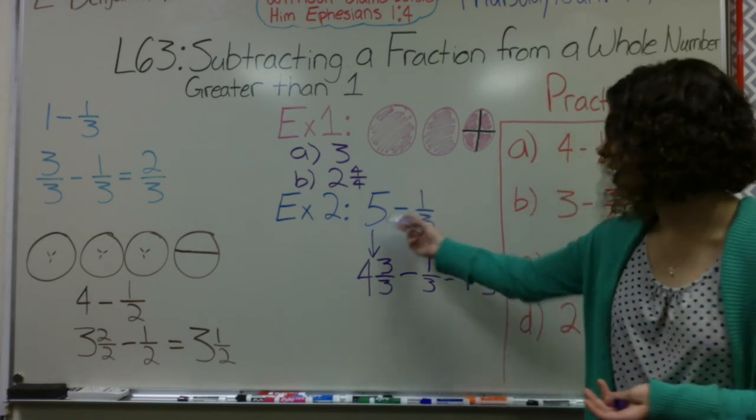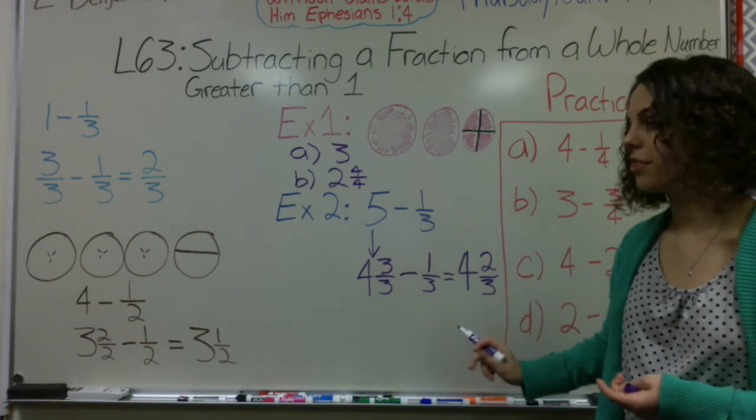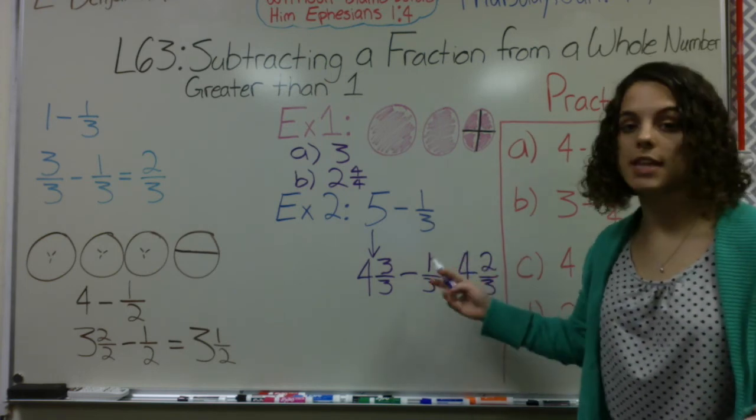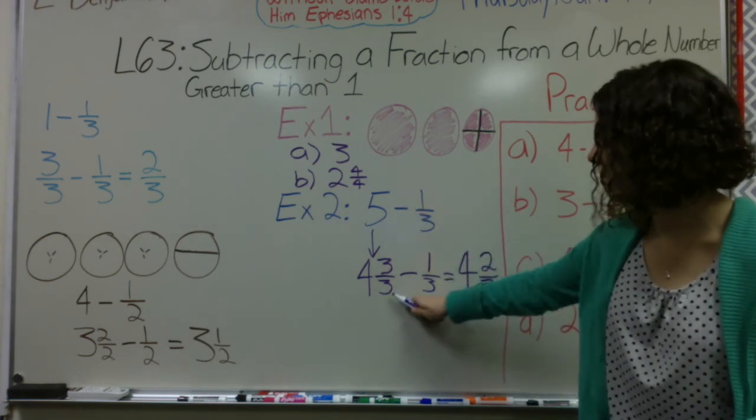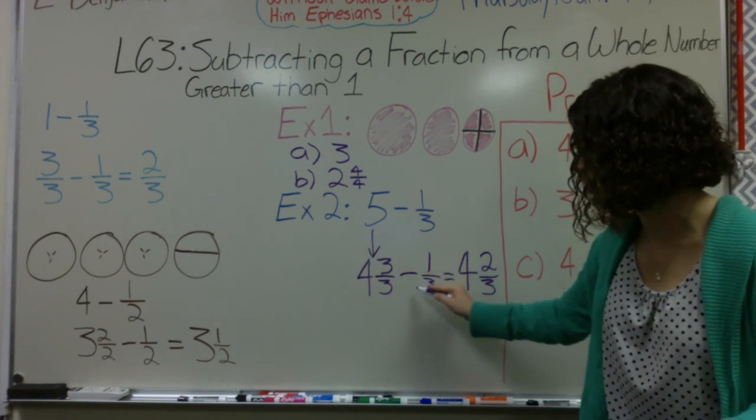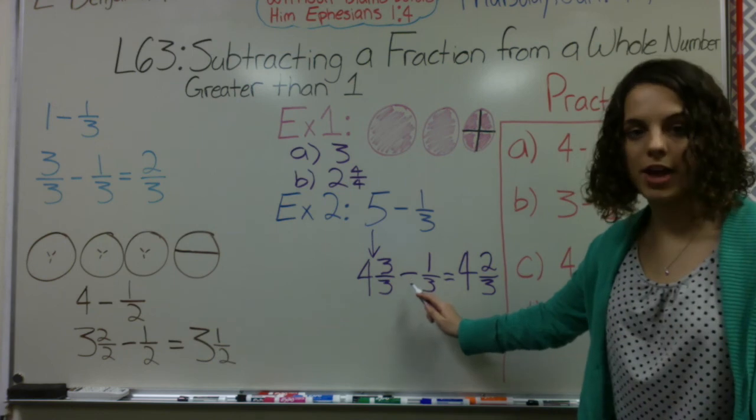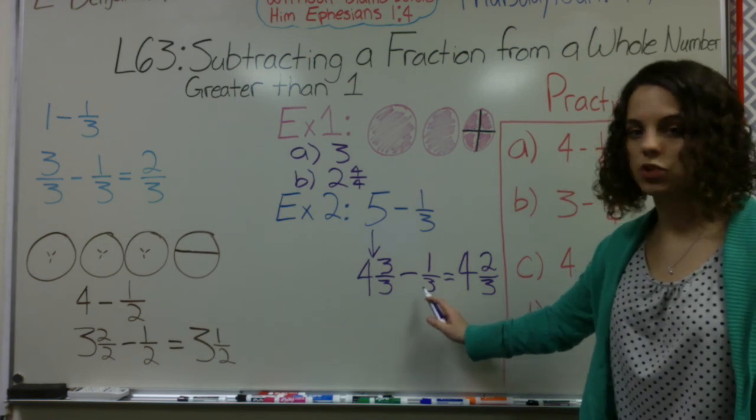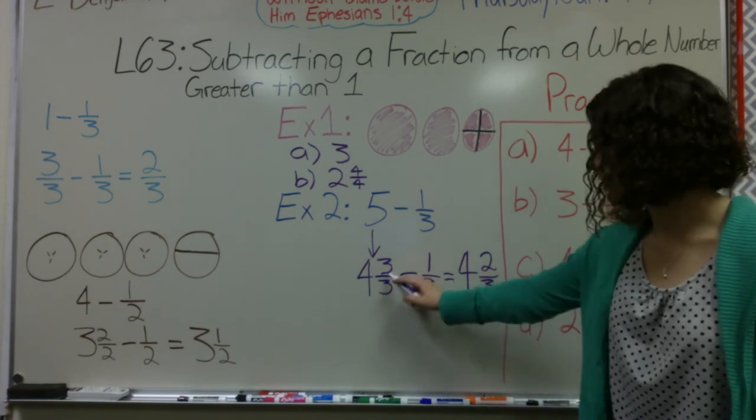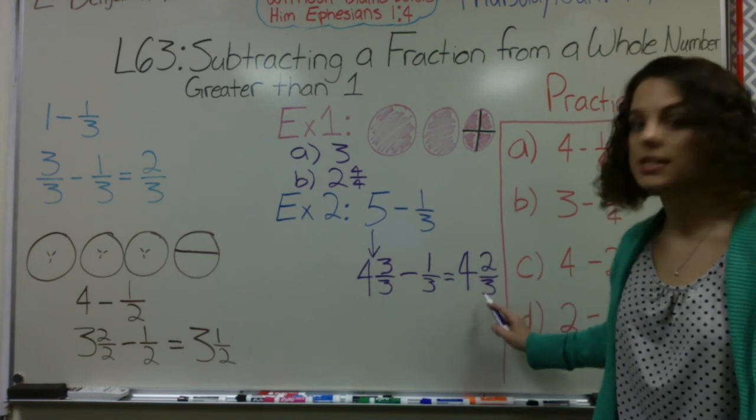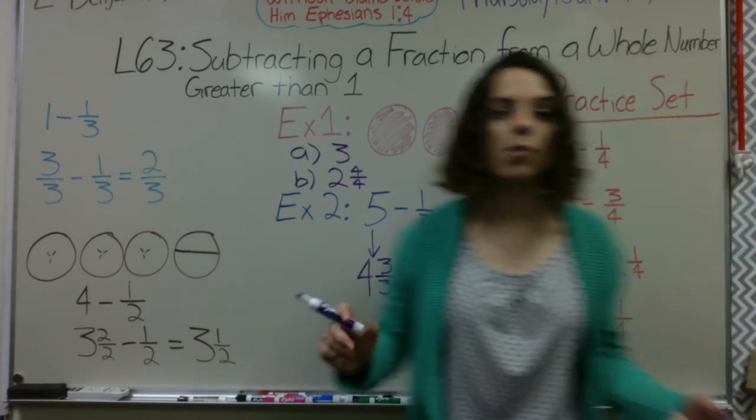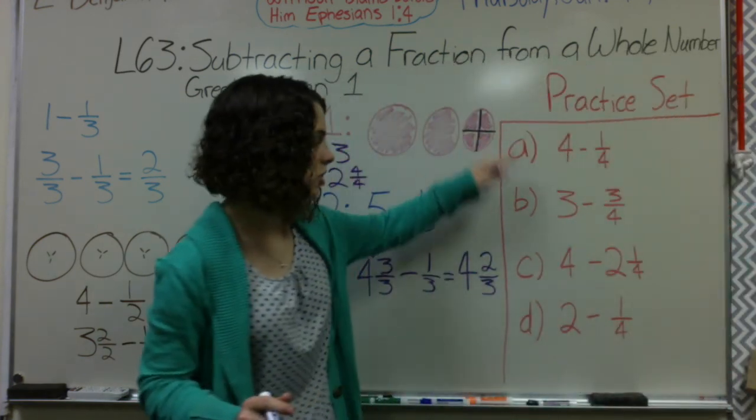Now if I were to have 5, let's say minus 2 and 1 third, I simply still do the same thing. I change my 5 to look like a mixed number and if I were to have 2 and 1 third, I would do 4 minus my whole number which hypothetically, if you were to say 2, then it would be 2 and still fraction minus fraction 2 thirds.